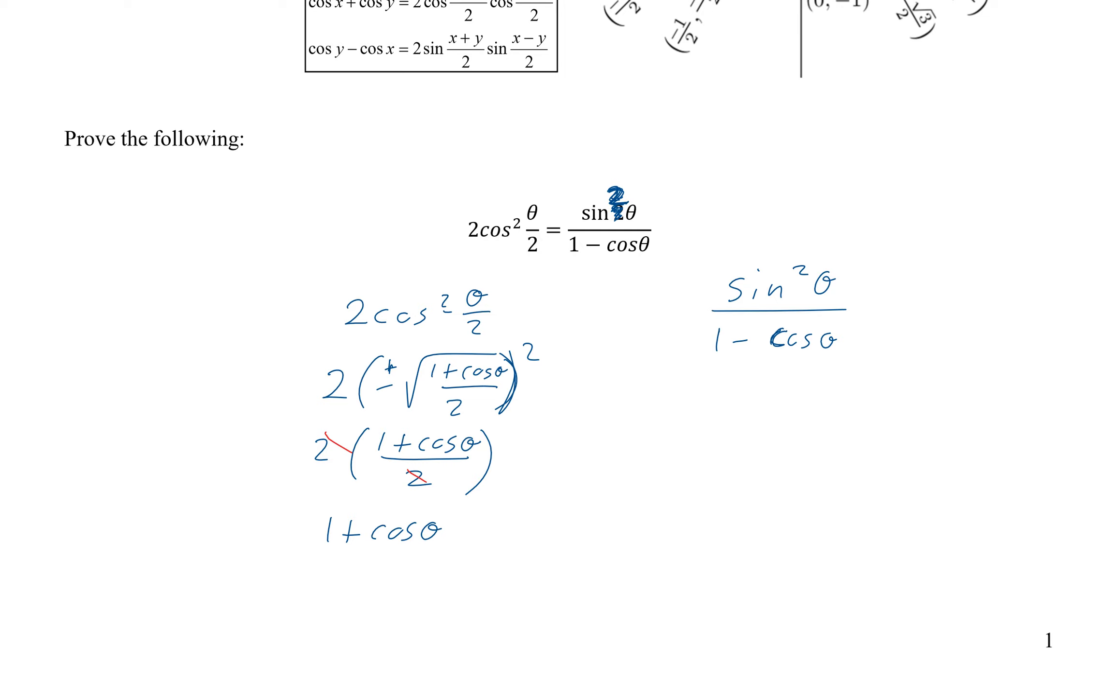So we need a denominator of 1 minus cosine theta, and we don't have 1. So if I just write 1 down there and then multiply by 1 as well, this is completely legal. This is multiplying by 1. 1 minus cosine theta is the same as 1 minus cosine theta, so they cancel to make 1.